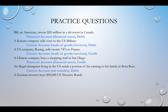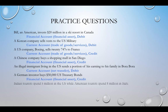A German investor buys U.S. Treasury bonds. Stocks and bonds are financial account, and it's a credit because money is coming in. Finally, Italian tourists spend $5 million while U.S. tourists spend $8 million abroad. We're spending more than they are, so it's a net debit, and it's current account because it's money leaving the country.